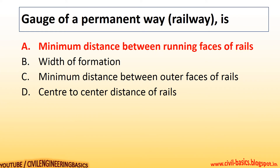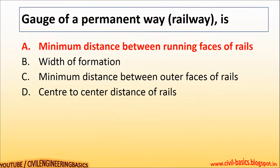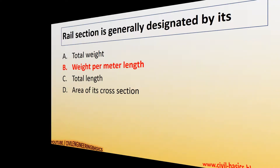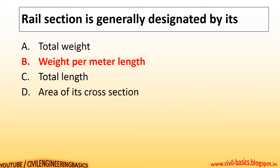Gauge of a permanent way (railway) is the minimum distance between the running faces of rails. Failure of a reinforced concrete beam occurs when the concrete strain in compression reaches 0.00035. The rail section is generally designated by its weight per meter length.